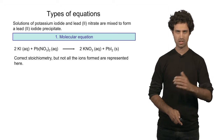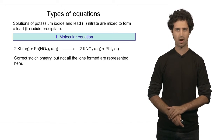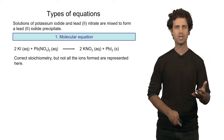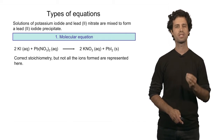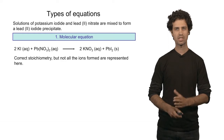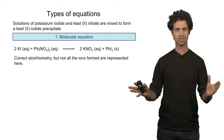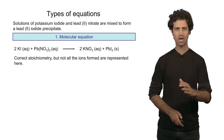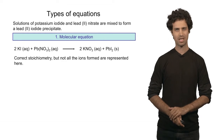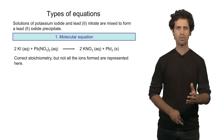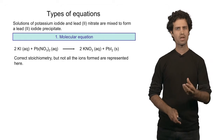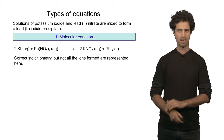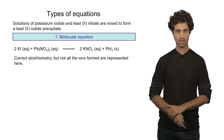However, what it does not show are the ions that are present in the solution. For instance, we know that potassium iodide splits into two ions: potassium ions and iodide ions. That is not shown in the molecular equation. Therefore, the molecular equation is a very compact way of writing precipitation reactions.